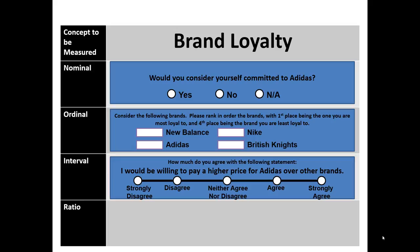Here's an example of brand loyalty being measured in an interval way: How much do you agree with the following statement — I would be willing to pay a higher price for Adidas over other brands — strongly disagree to strongly agree. Marketers would typically take this type of scale and calculate means, variance, and standard deviations. Therefore, we tend to treat this as interval data.